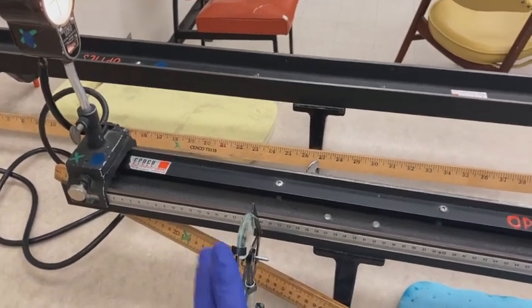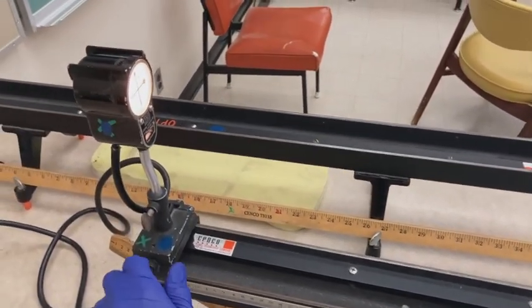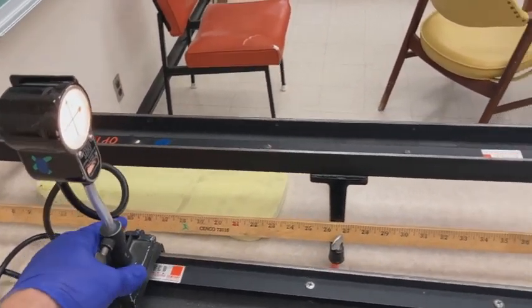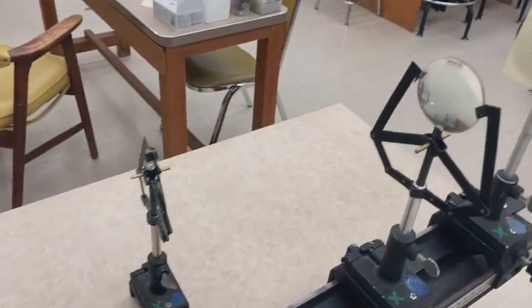Once again, remove the plus 5 diopter lens and move the light source in order to locate the position that gives a clear image on the screen.